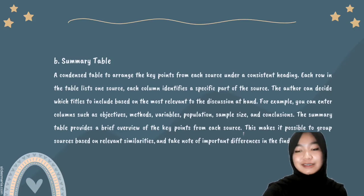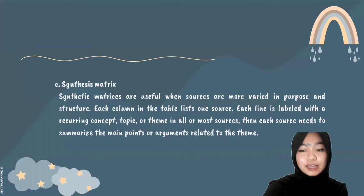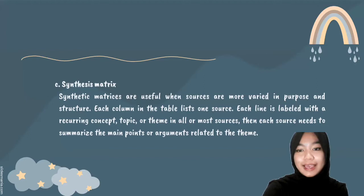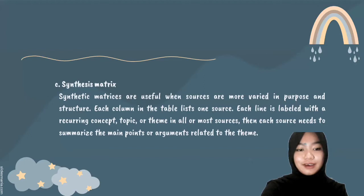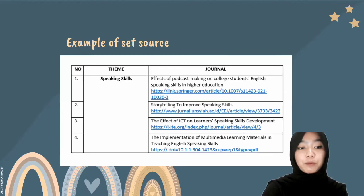Option C is a synthesis matrix. Synthesis matrices are useful when sources are more varied in purpose and structure. Each column in the table lists one source, and each row is labeled with a recurring concept, topic, or theme found in all or most sources. Then each cell needs to summarize the main point or arguments related to that theme. This is an example of step one — I put speaking skill here as the theme, along with the journal and link of the journal.